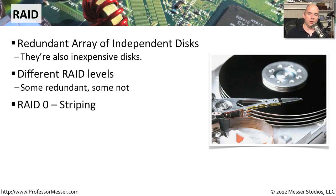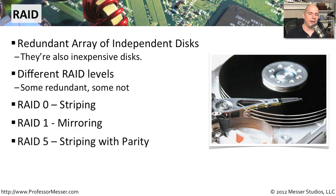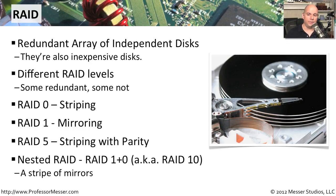The first one we're going to look at is RAID 0, which stands for a striping of data across disks. There's also RAID 1, which mirrors information across disks. RAID 5 uses striping but adds parity to that configuration. The last RAID you'll need to know is a nested configuration called RAID 1 plus 0, also referred to as RAID 10, which is effectively a stripe of mirrors.